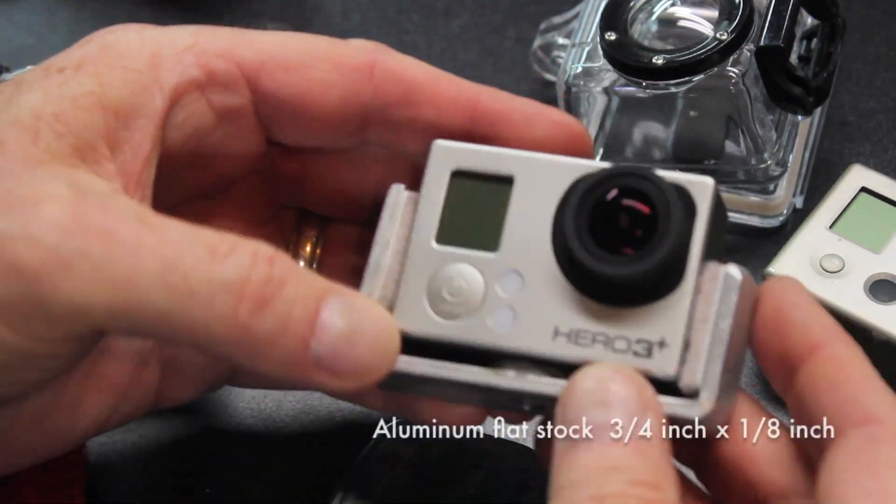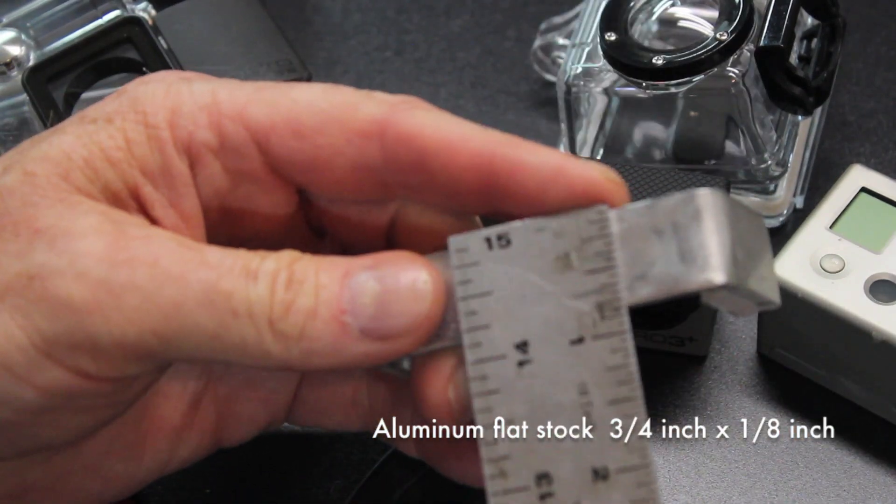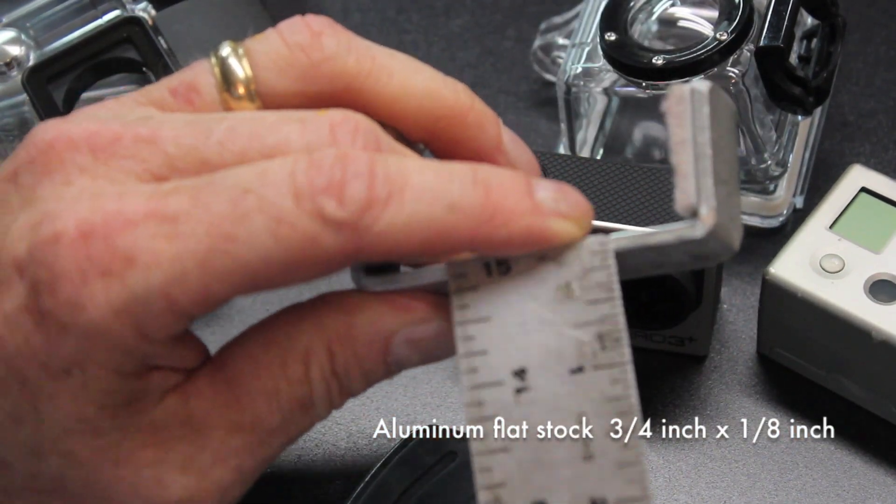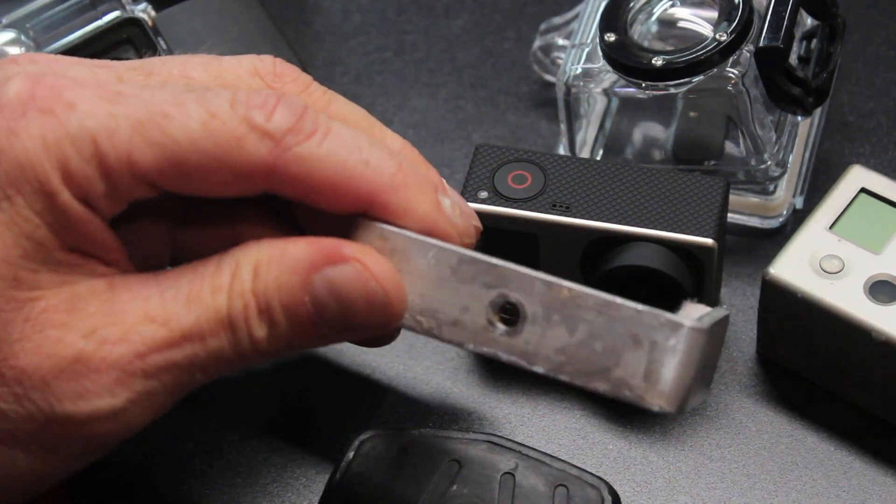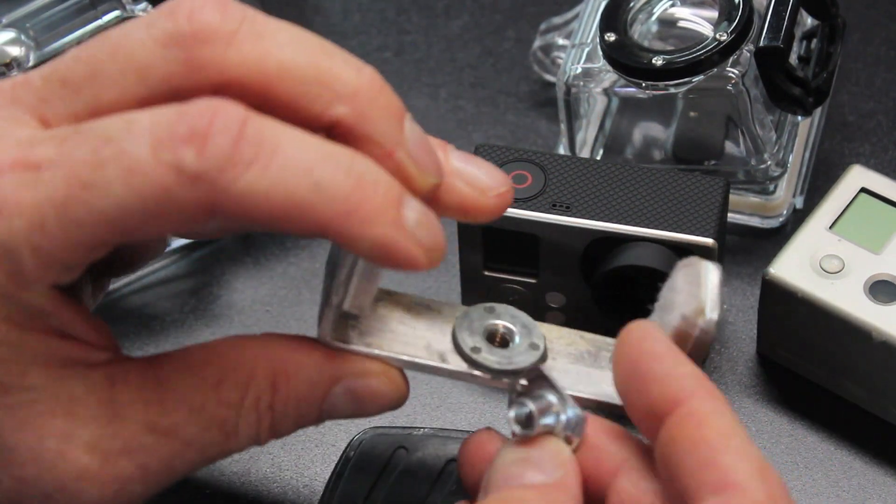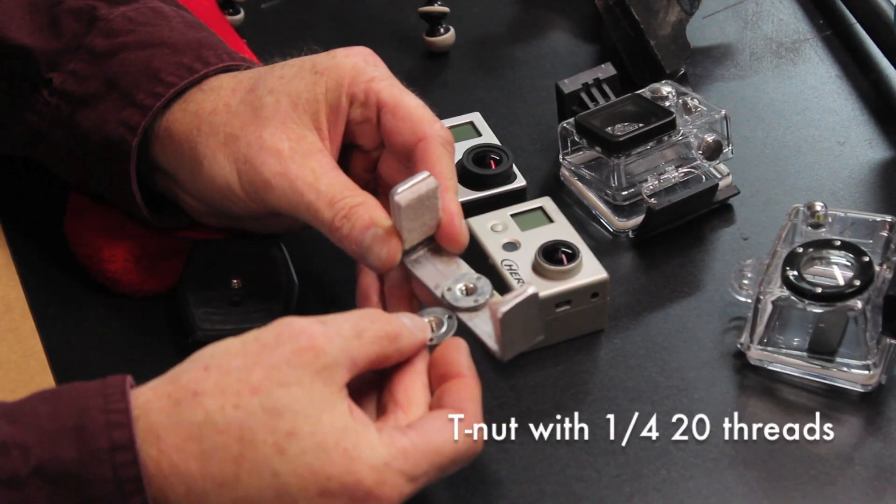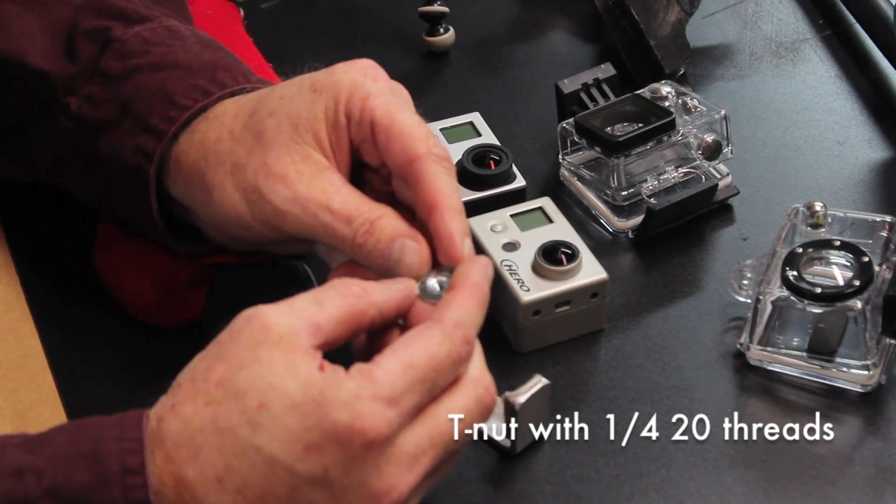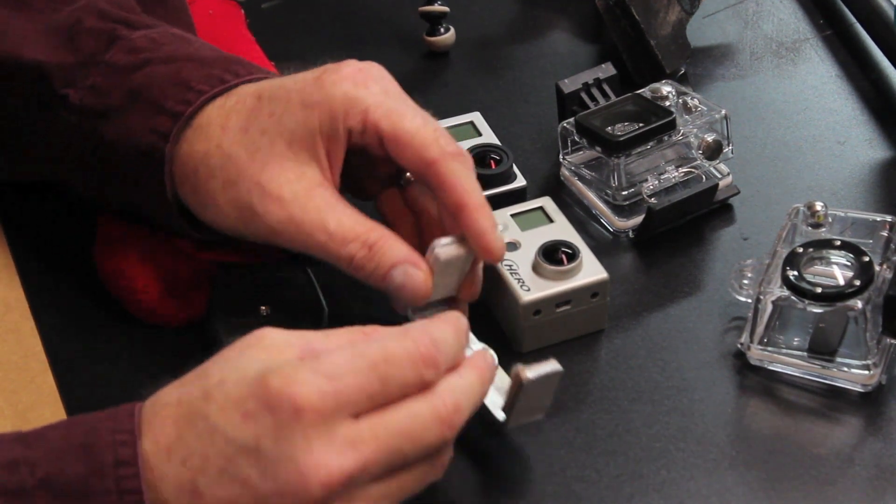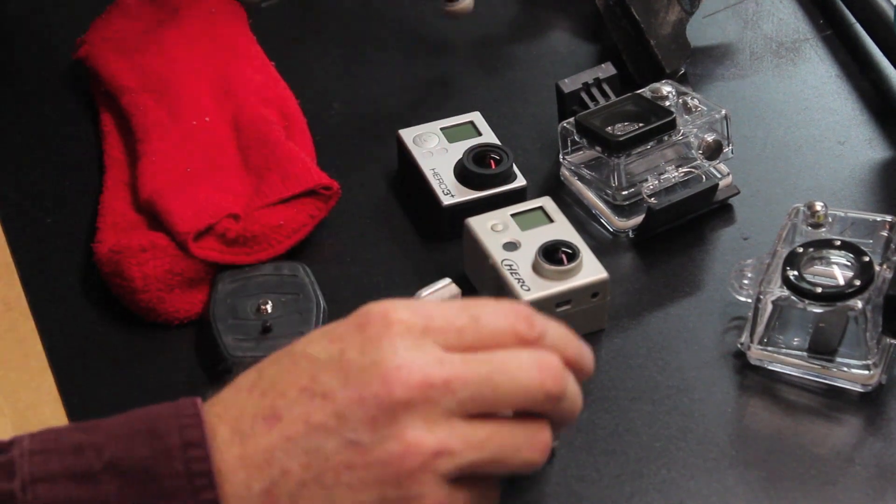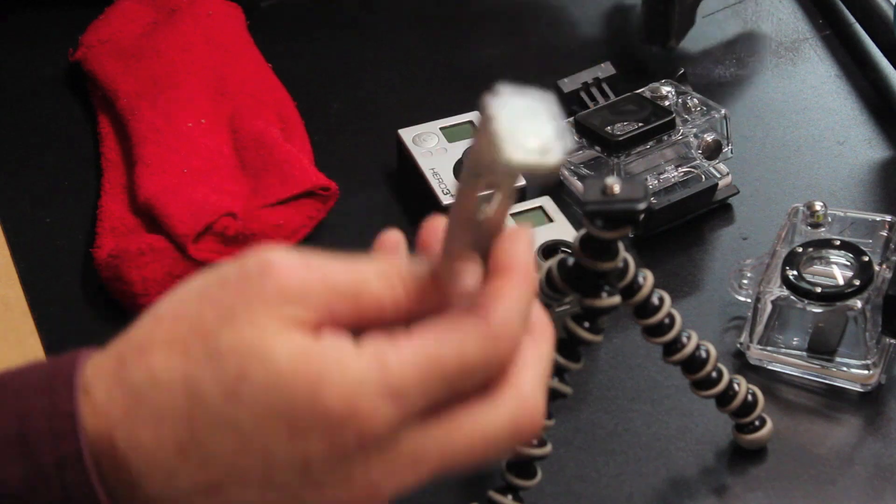This is a piece of aluminum flat stock, three quarters of an inch by one eighth of an inch, bent in a vise, and then I drilled it out and put a T-nut in here. The T-nut is threaded on the inside with a quarter to 20 threads. And that will fit into anything, whether it's a gorilla tripod like this, or a clip mount with a little ball joint holder.